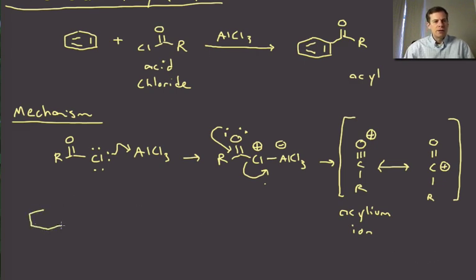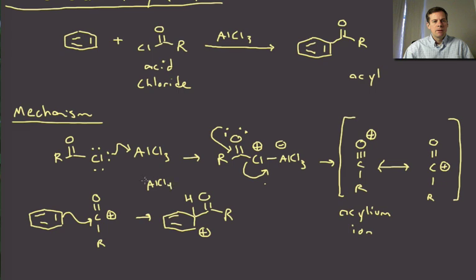And then all we need to do is to react our benzene with the acylium so whichever resonance form you want to use that's fine, I'll just use this one and the pi cloud is going to attack, which will lead us to this intermediate. Okay so there's our acyl group.